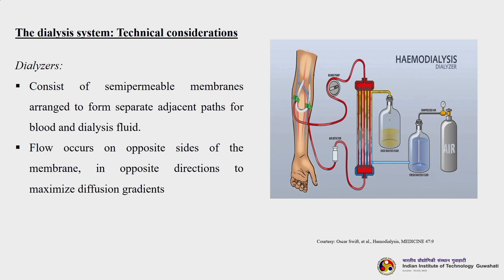The dialyser consists of a semi-permeable membrane arranged to form separate adjacent paths for blood and dialysis fluid. Flow occurs on opposite sides of the membrane in opposite directions to maximize diffusional gradients. Blood is pumped in, flows through, and dialysate (buffer solution or water) passes on the other side in the opposite direction. The separation occurs, the effluent enriched with salts is collected, and the purified, volume-reduced blood with toxic components removed is fed back to the patient.